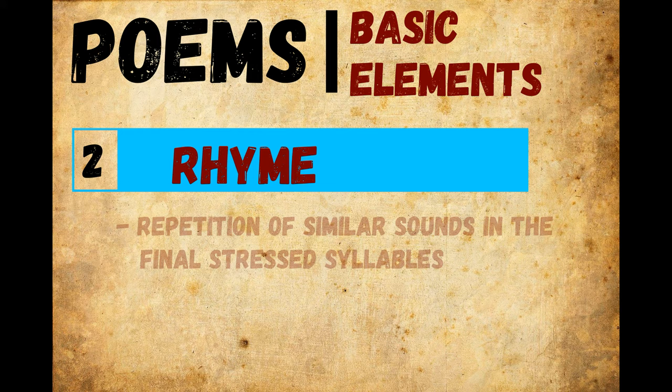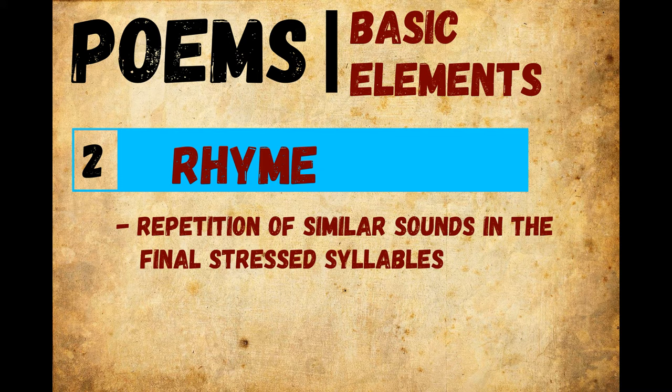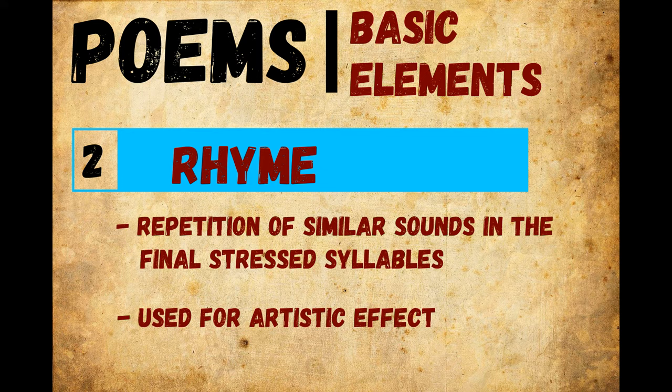A rhyme is a repetition of similar sounds in the final stressed syllables and any following syllables of two or more words. Most often, this kind of perfect rhyming is consciously used for artistic effect in the final position of lines within poems.